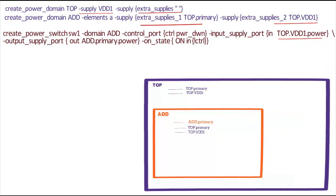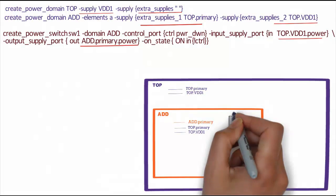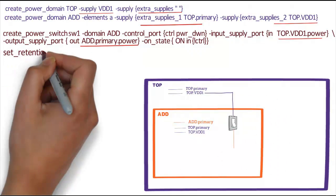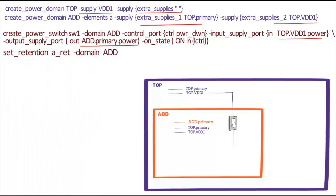We define Power Switch in Domain Add, input connected to Top.VDD1 power and output connected to Add.Primary power. Then we define a Retention Strategy in Domain Add. So, the Add.Default Retention will be created.